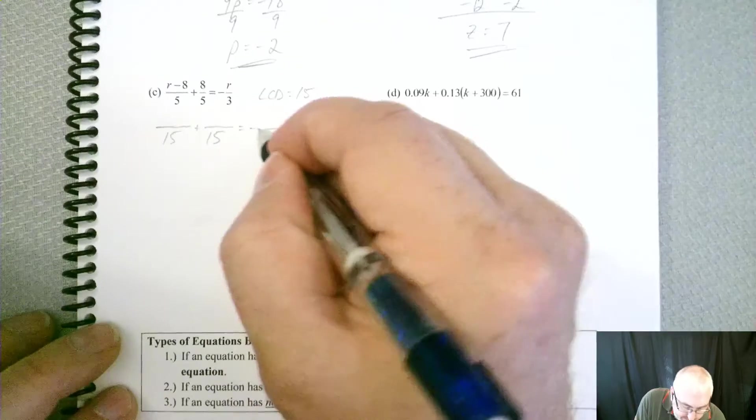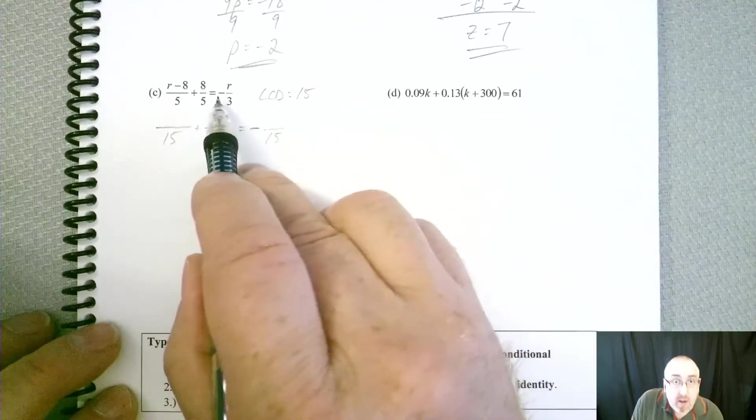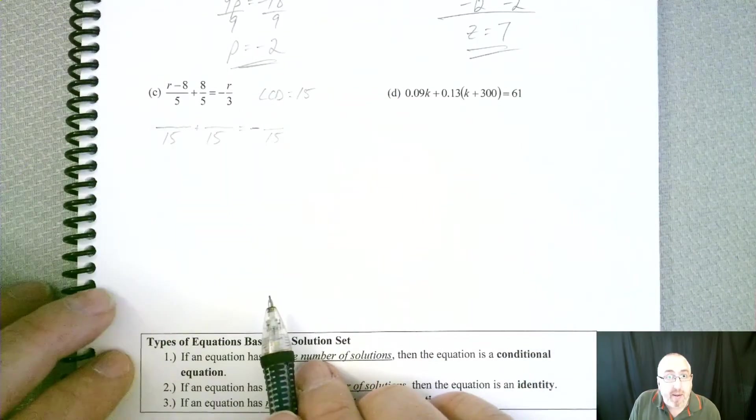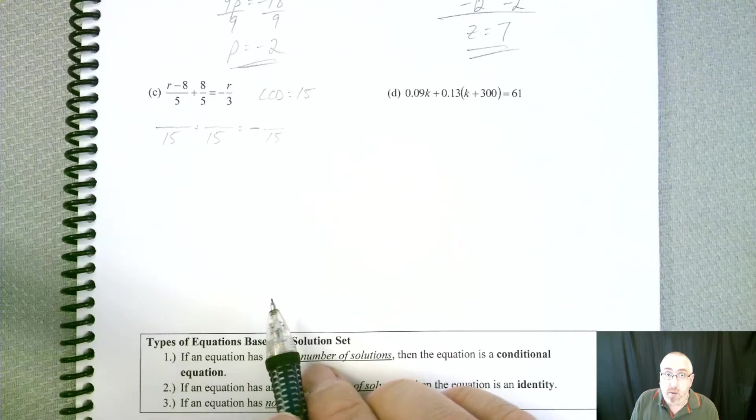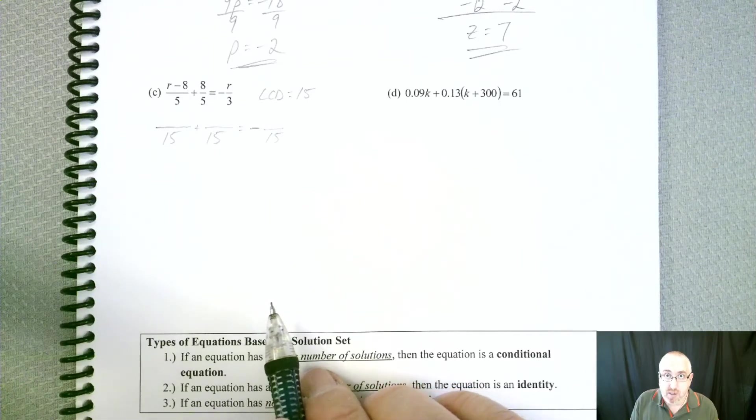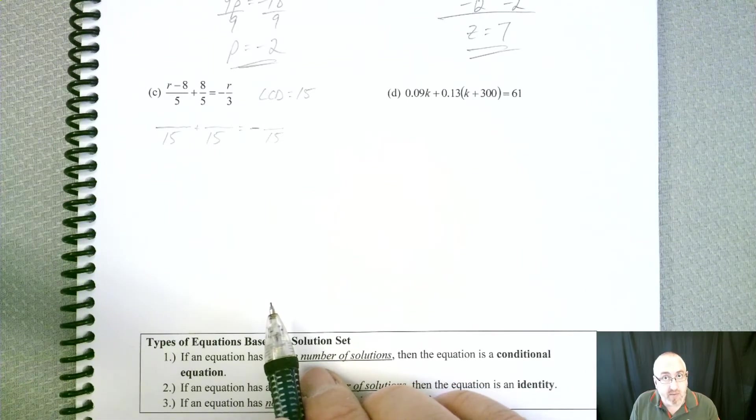So we've got all of our denominators changed to 15s. It's hard to see, but you've got a minus sign in there still from up there. And so now we've got to be careful and make sure we change the tops. Remember, if you change the bottoms, you also have to change the tops.